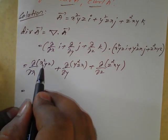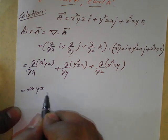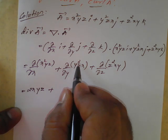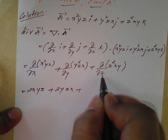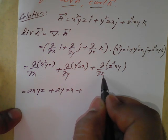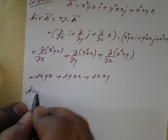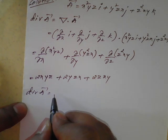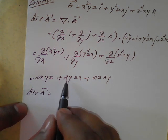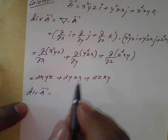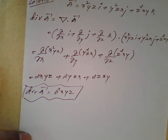On simplification: first term, differentiate partially with respect to x — y and z are constant, so partial derivative of x squared is 2x, giving 2xyz. Next, differentiate y squared partially with respect to y — zx is constant, giving 2y, so 2xyz. For the third term, differentiate z squared xy partially with respect to z — xy is constant, giving 2z, so 2xyz. All are like terms, so 2xyz plus 2xyz plus 2xyz equals 6xyz. Therefore, divergence of vector A equals 6xyz.